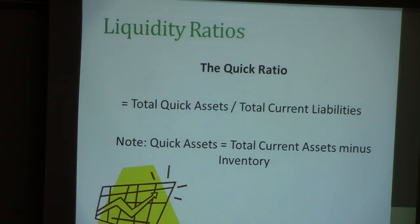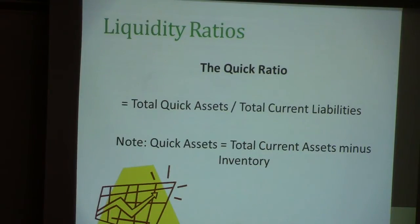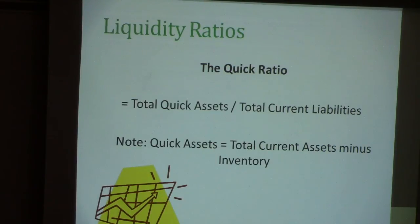The third liquidity ratio is the quick ratio. You take quick assets and divide by current liabilities. The difference between current assets and quick assets is that quick assets do not include inventories — anything you have purchased to sell, such as a furniture store buying furniture to resell. This is a harder ratio to meet, in the sense that a company may not have more quick assets than current liabilities. However, they should aspire toward having more quick assets than current liabilities, because in a time of hardship you may not be able to sell all your inventory on time, and that's why you need a good amount of quick assets.